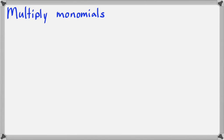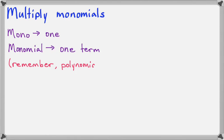In this lesson, we'll talk about how to multiply monomials together. A monomial is just a polynomial that is only one term. I'm sure you've seen the prefix mono on other words, and the prefix mono always means one. So monomial is one term, and I know you remember that polynomial is many terms.